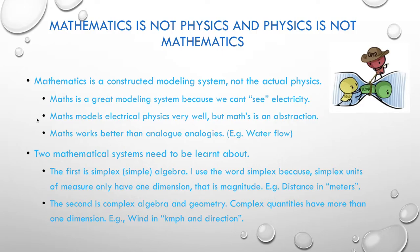Mathematics isn't the physics and physics is not the maths. Mathematics is a constructed modelling system, not the actual physics itself. Math is a great modelling system because we can't see, touch, taste, smell or hear electricity. Maths models electrical physics very well, but maths is an abstraction in and of itself. Maths works better than analogue analogies like water flow, which we use often in DC to start with, but the analogy falls over reasonably quickly.